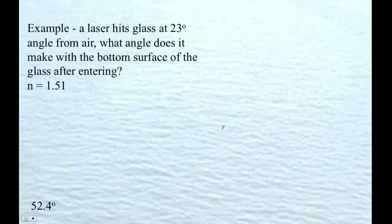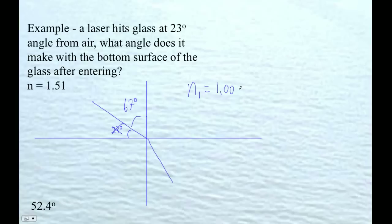So here's an example. A laser hits glass at 23 degree angle from the air. What angle does it make with the bottom surface of the glass? This is the hardest possible question that we could ask. So what they're saying is that this angle here is 23 degrees. Now, concept zero, do not use that thing. What we use in refraction is we use these angles here. So this theta here is 67 degrees. So that's the angle we want to use. We do not want to use that angle. And then this guy is going to refract like this. So here, n1 is 1.00. Really, it's 1.003, but we'll just go with that. N2 is glass, so it's 1.51.